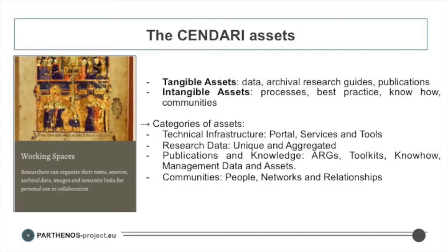For Sendari purposes, we broke these assets down into four specific classes. First, the technical infrastructure, including portal services and tools. Second, the research data — both the unique data created in the project and aggregated data we didn't own but had brought together and added value to. Third, publications and knowledge: specific archival research guide publications, papers, reports, toolkits, know-how, management data, and other things where we felt there was potential reuse value. And fourth, we looked at communities, people, networks, and relationships — we had brought many people together throughout the project and needed to think about how to sustain that momentum.